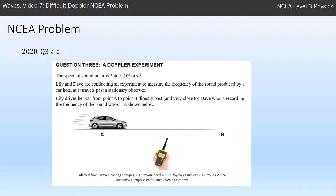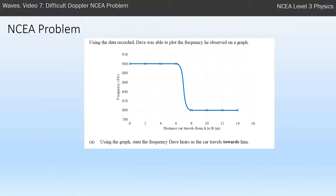It's from 2020. I'm going to go through question 3A to D, all of them. The speed of sound is 340 metres per second. Lily and Dave are conducting an experiment — Lily drives her car from point A to B, and Dave records the frequency of the sound waves, shown in the graph. Use the graph to state the frequency that Dave hears when the car travels towards him.